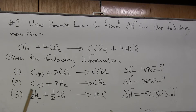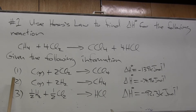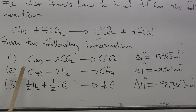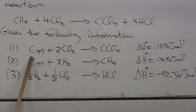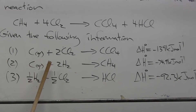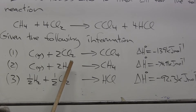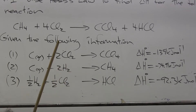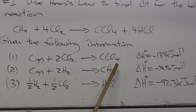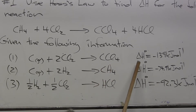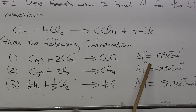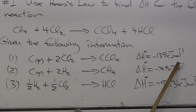You are given the following information. Reaction one: carbon in the graphite form plus two molecular chlorines, 2Cl2, goes to give carbon tetrachloride, CCl4. The enthalpy ΔH° for that reaction is minus 139 kilojoules per mole.